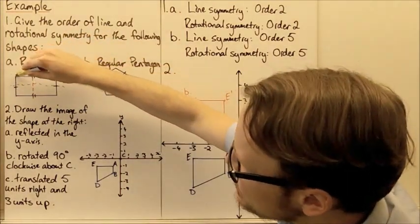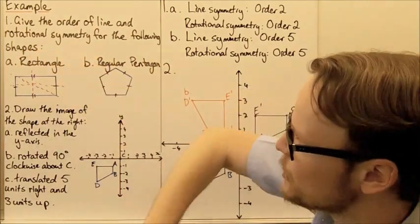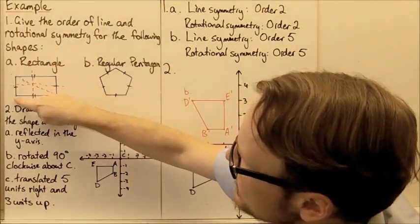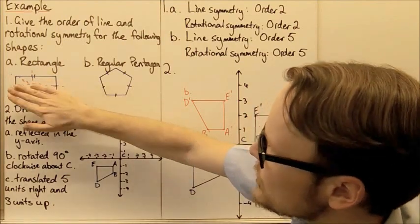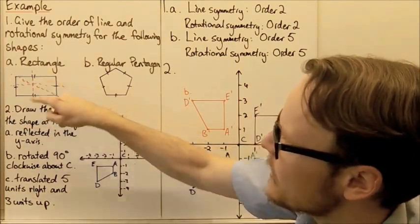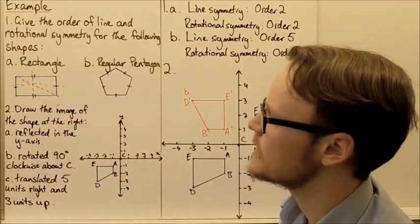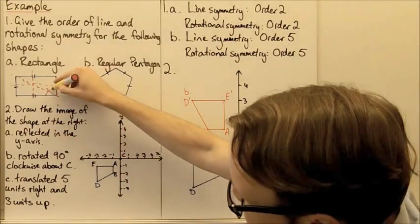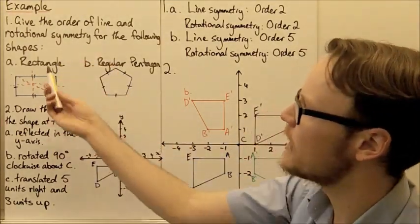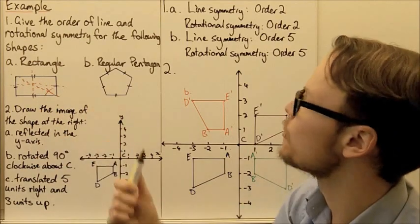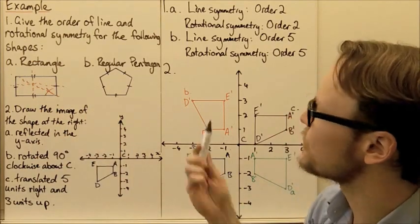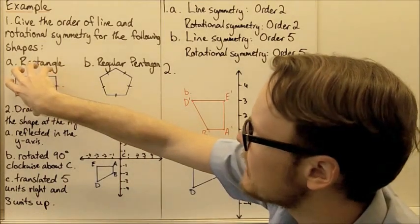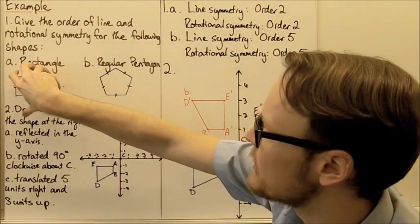We can't use a diagonal because if we were to mirror that, this point here wouldn't exactly overlap the other side — so there are no diagonals. It only works vertically and horizontally. So the order of line symmetry is two.